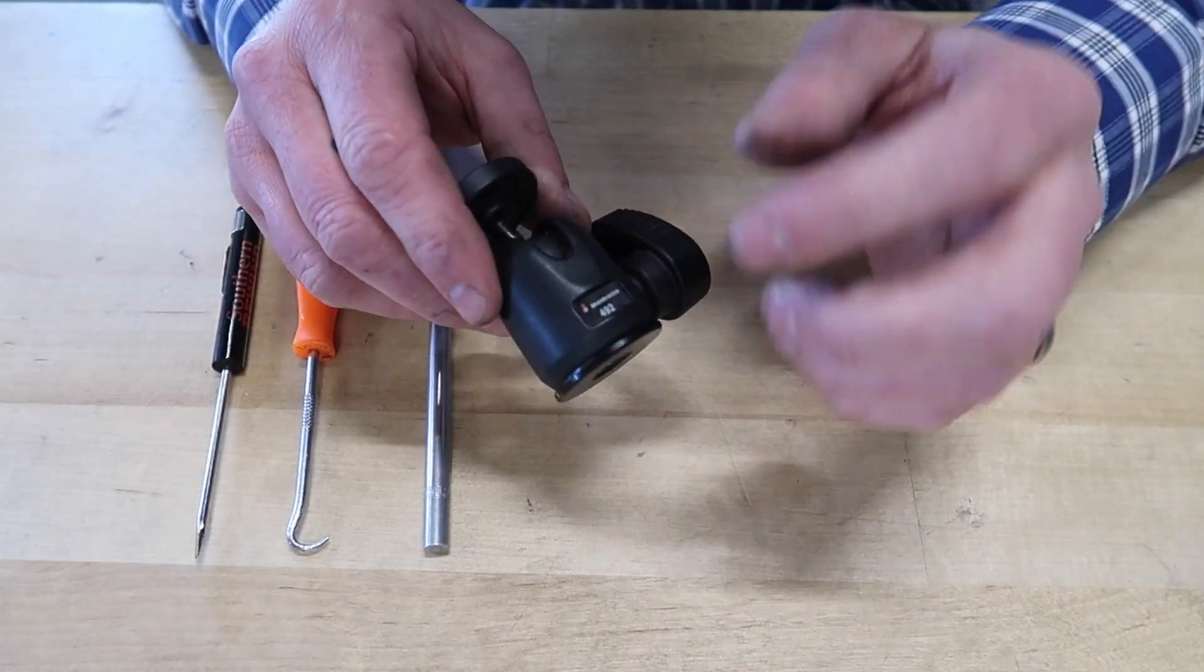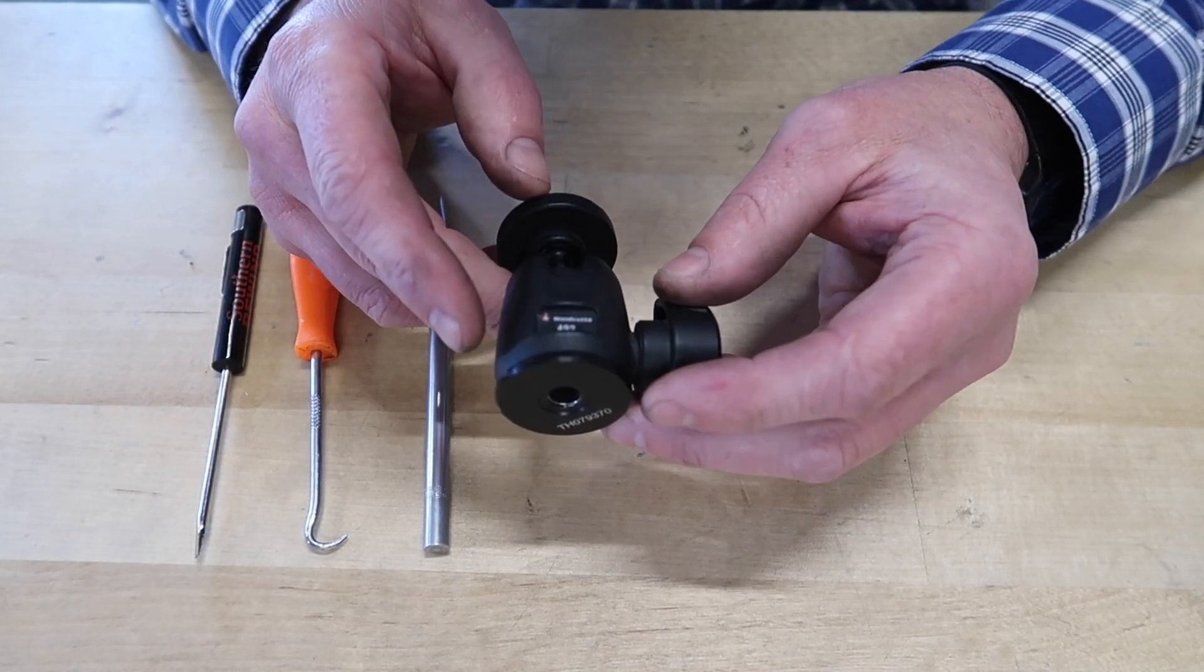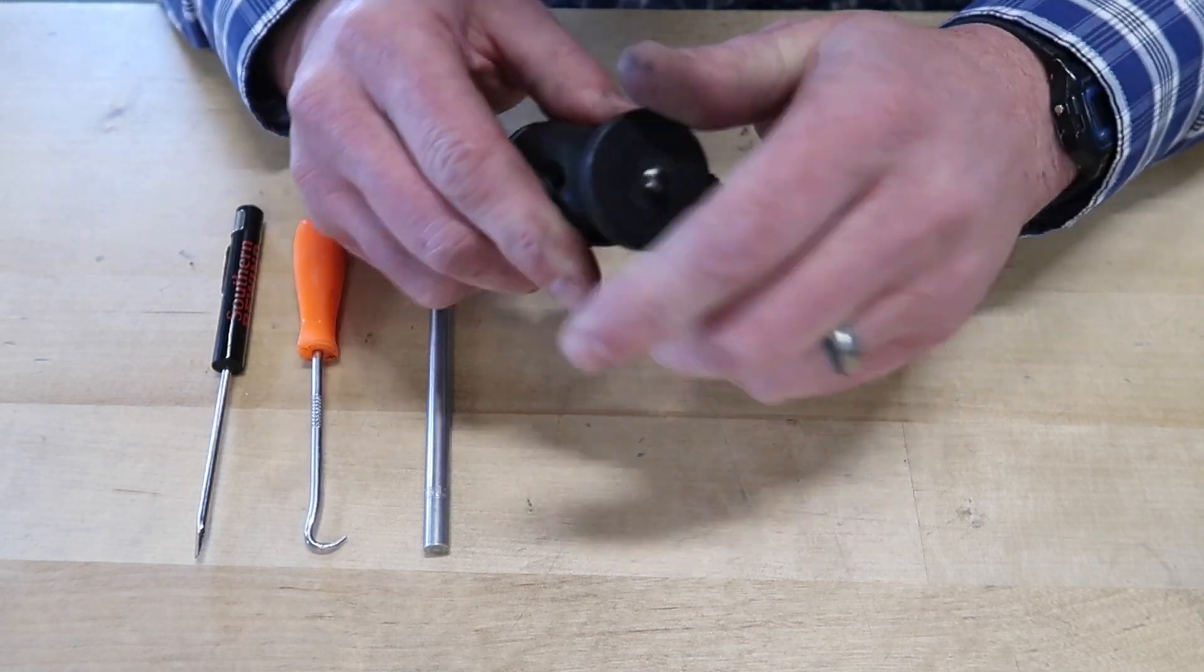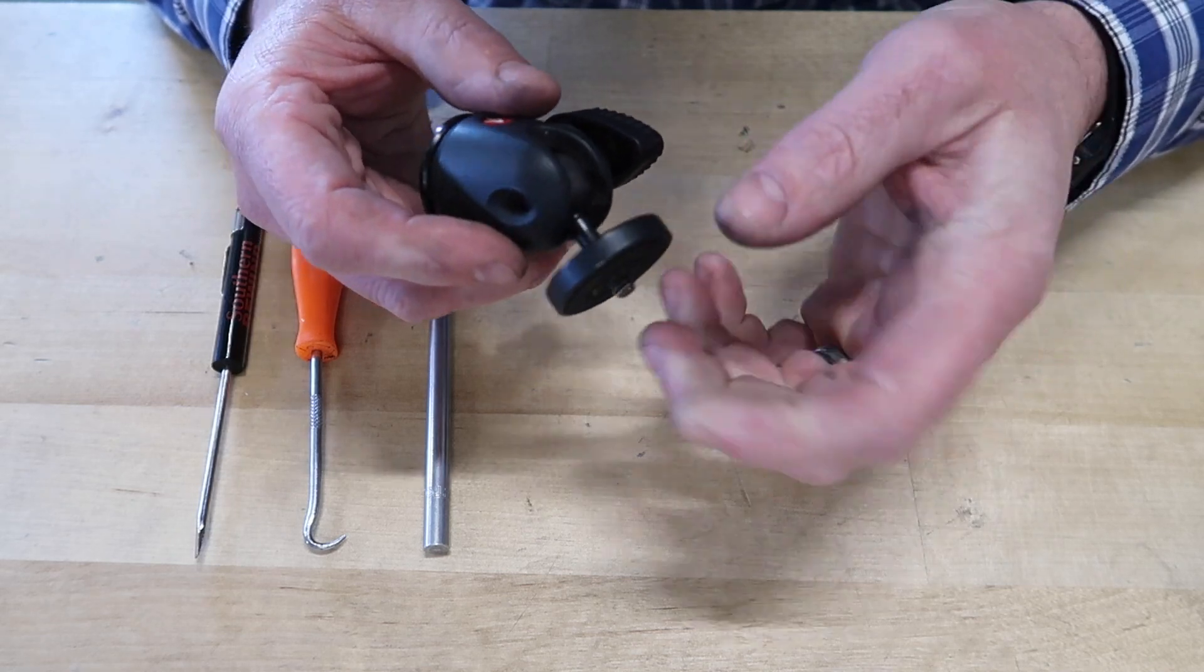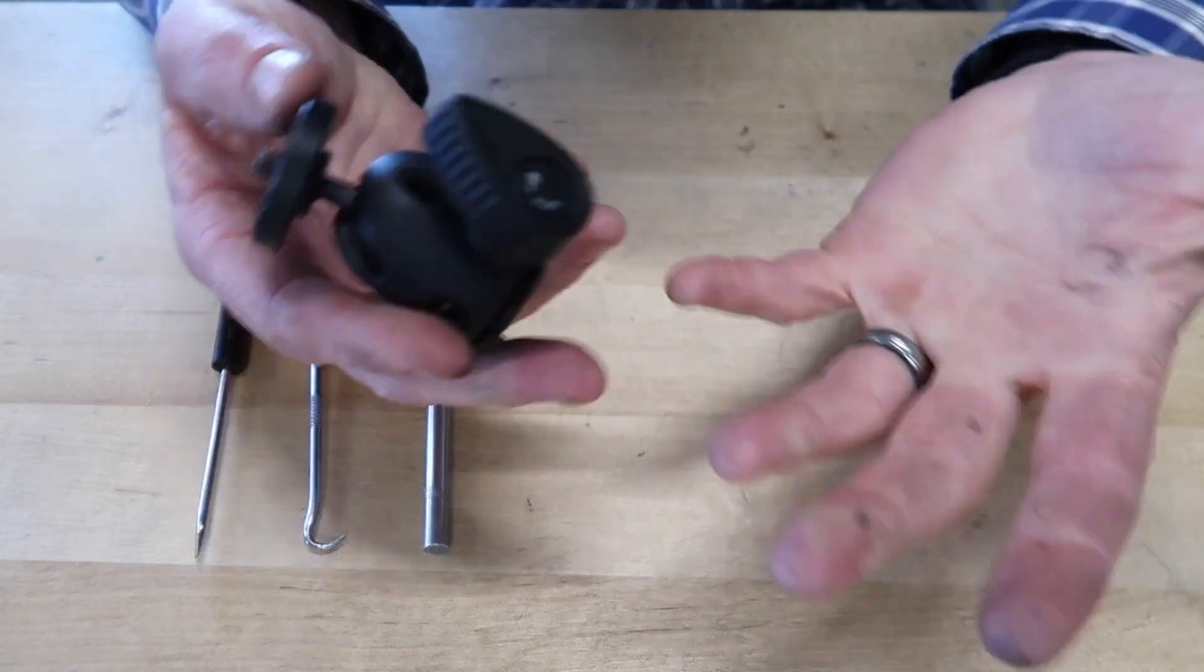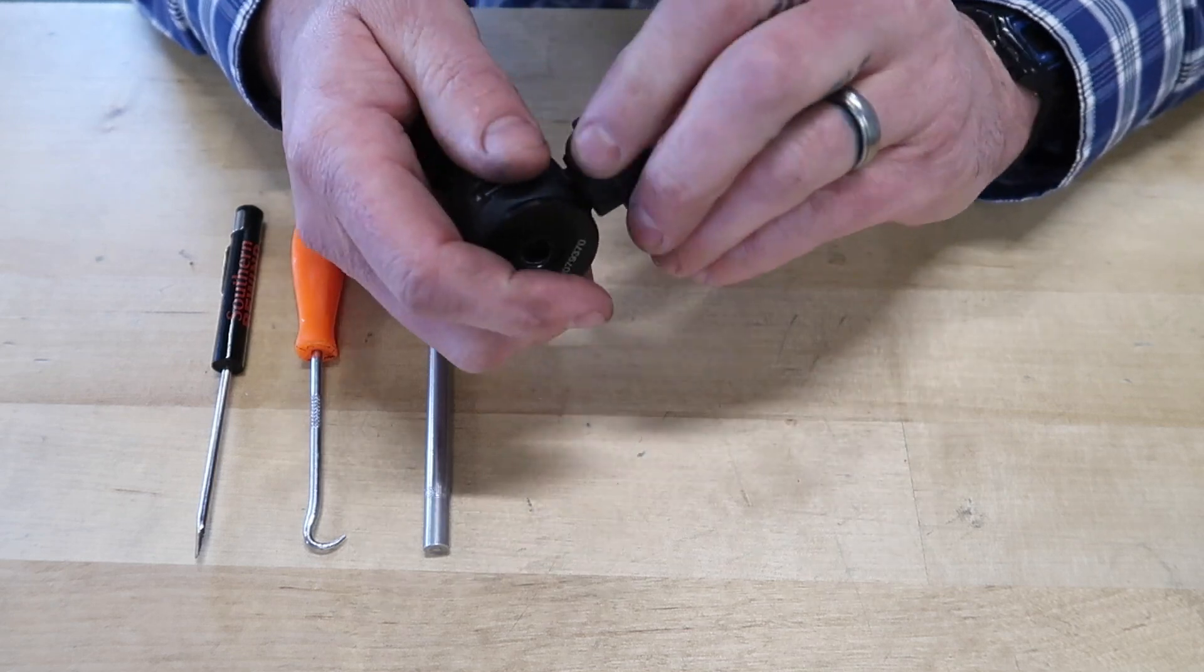So I have this Manfrotto 492 ball head and it's a great little ball head, but lately it's losing some of its friction. It seems there's a layer of real thick black stuff under there, and I'm wondering how I'm going to clean that.